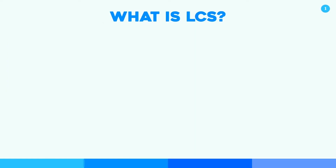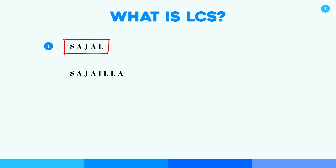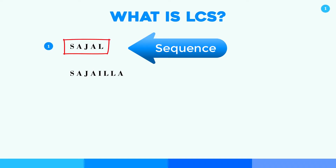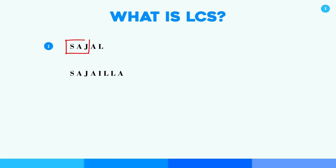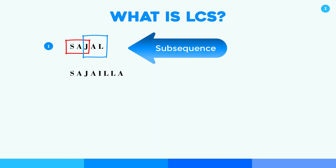What is LCS? Firstly we should know about the sequence. A sequence means a set of objects or elements in an order. Here we can see the string 'Sajal' — S-A-J-A-L — is in order. So it's a sequence, and also S-A-J or J-A-L is a part of that sequence, so it will be a subsequence.